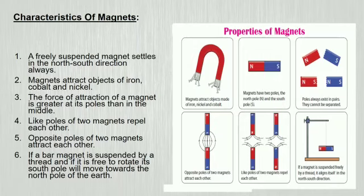Like poles of two magnets repel each other whereas opposite poles of two magnets attract each other. If a bar magnet is suspended by a thread and if it is free to rotate, its south pole will move towards the north pole of the earth.